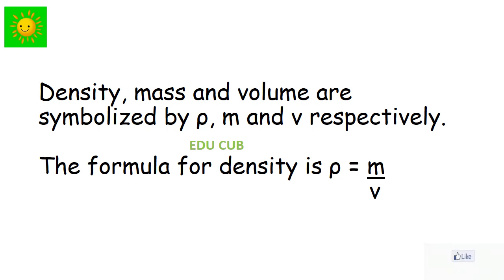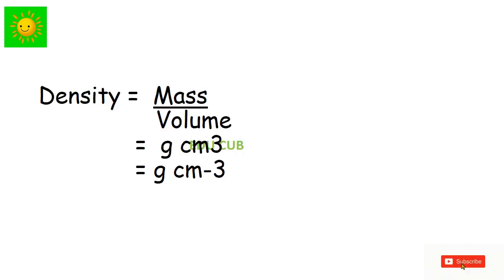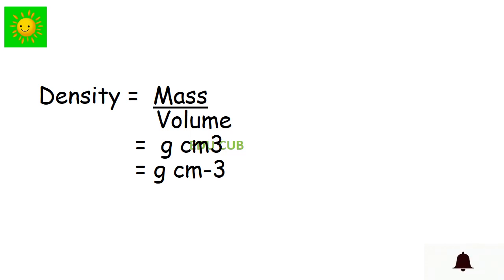The formula for density is: ρ = m ÷ v. For units of density, since mass is measured in grams and volume in cubic centimeters, we divide grams by cubic centimeters. So the unit is gram per cubic centimeter (g/cm³).